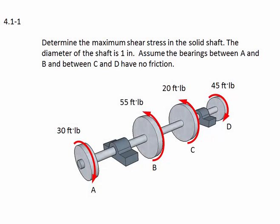Problem 4.1-1. The problem statement reads, determine the maximum shear stress in the solid shaft. The diameter of the shaft is one inch. Assume the bearings between A and B and between C and D have no friction.